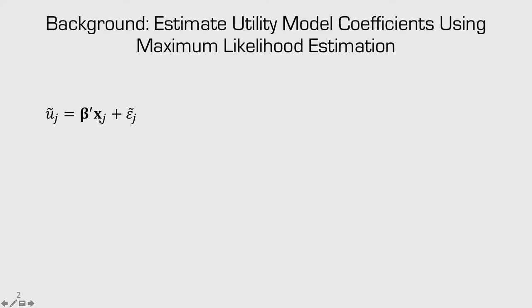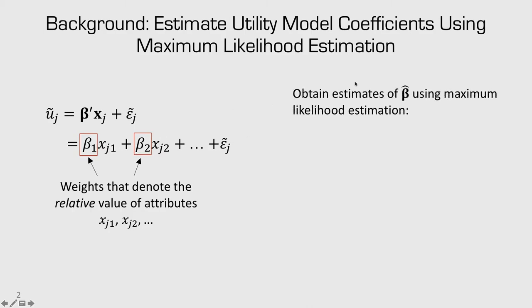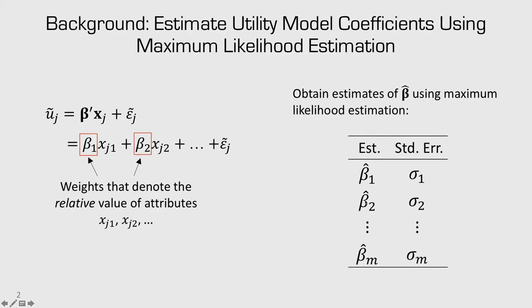We start with a utility model. We have our observed utility and our error term. The observed utility is just a sum product of different beta coefficients and the attributes associated with them. We're interested in these coefficients because they tell us the relative value of each different attribute. We obtain estimates of beta using maximum likelihood estimation and end up with a table where each coefficient represents a mean, with uncertainty represented by the standard error.